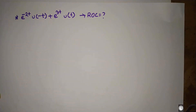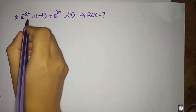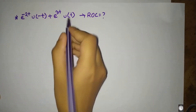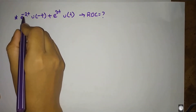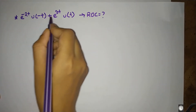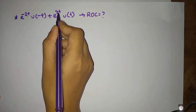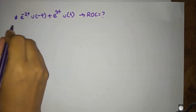Welcome to our channel. In this video, we will see the convective function of Laplace transform, which is the region of convergence. The function is e to the power minus 2t, u of minus t, plus e to the power 3t, u of t.